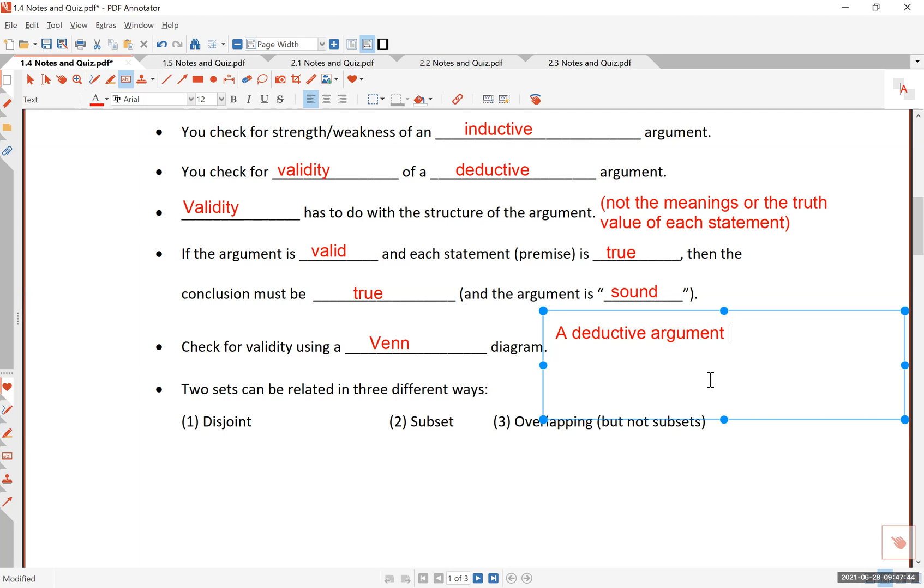A deductive argument. Try to get the main point of the statement. A deductive argument can be valid without the conclusion being true. What do I mean by this? What I'm saying is that the argument, as far as the logical structure is concerned, could be valid. But if the premises are false, then the conclusion can be wrong. So a valid argument, the validity has nothing to do with the truthfulness or the correctness of the conclusion. That is a very important point for you to remember.